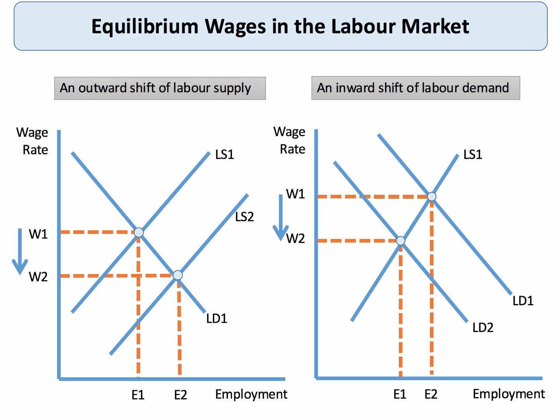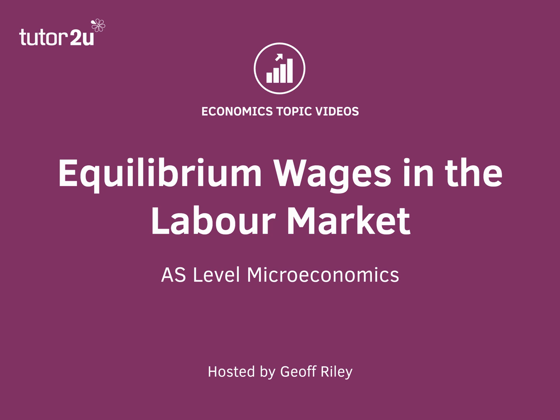Now we're assuming in this model that wages and employment do respond to these shifts in demand and supply. It could be the case that wages are fairly sticky — for example, at W1 they don't necessarily fall. There could be some imperfections in the labour market preventing that from happening. But this is the basic economics of shifting labour demand and labour supply and how it affects wages. We'll take a look at wage differentials in our next topic video, but for now this is an introduction to equilibrium wages in the labour market.